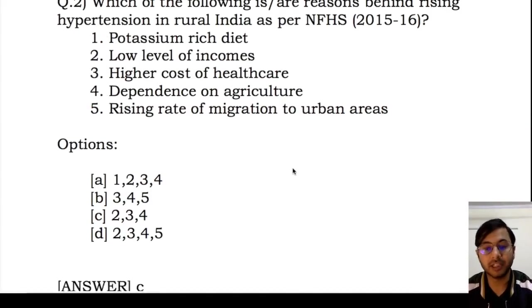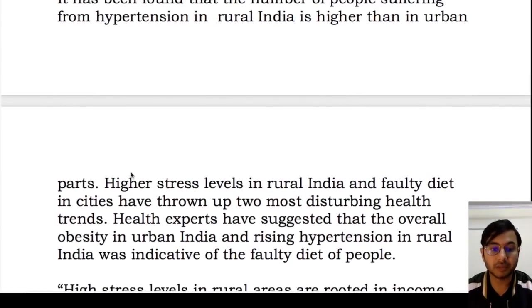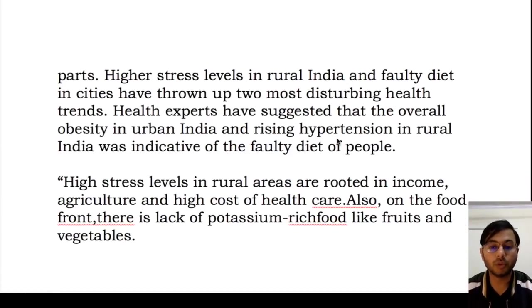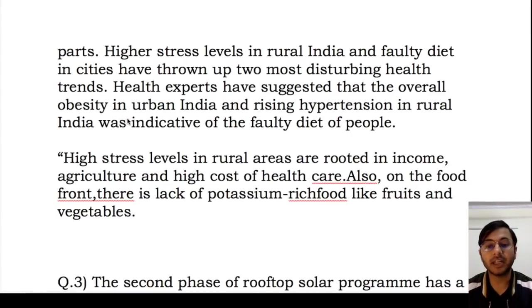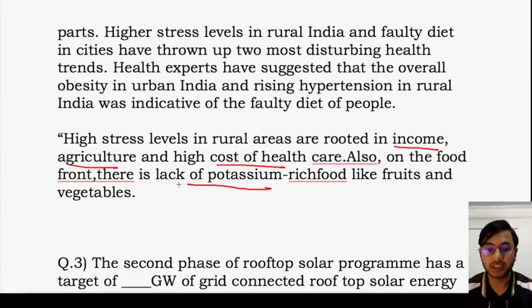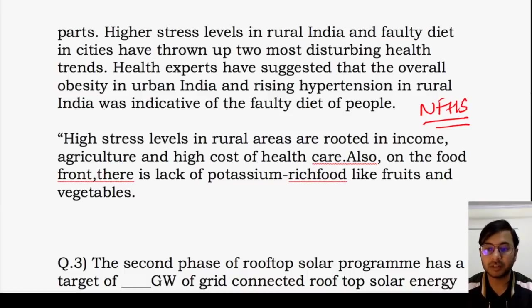These options are confirmed by NFHS 2015-16. The report found that hypertension is higher in rural India. Higher stress levels in rural India and faulty diets in cities have produced two disturbing health trends: obesity in urban India and rising hypertension in rural India. The main reasons are income, agriculture, and high cost of healthcare. On the food front, there is a lack of potassium-rich food like fruits and vegetables — lack of potassium, not a potassium-rich diet. Your homework is to go through NFHS; it will take just 10-15 minutes.